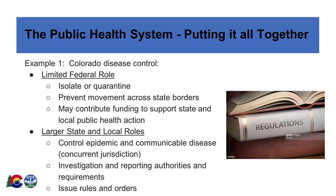The federal government may also provide funding to support state and local public health disease response activities and declare public health emergencies pursuant to federal law, which will also provide a pathway to some federal reimbursement of costs. For specific response actions within a state, it's the state and local governments — through the authority granted by the Tenth Amendment to the United States Constitution, which leaves to the states those powers not reserved to the federal government — that do the heavy lifting on disease control and prevention within a state.